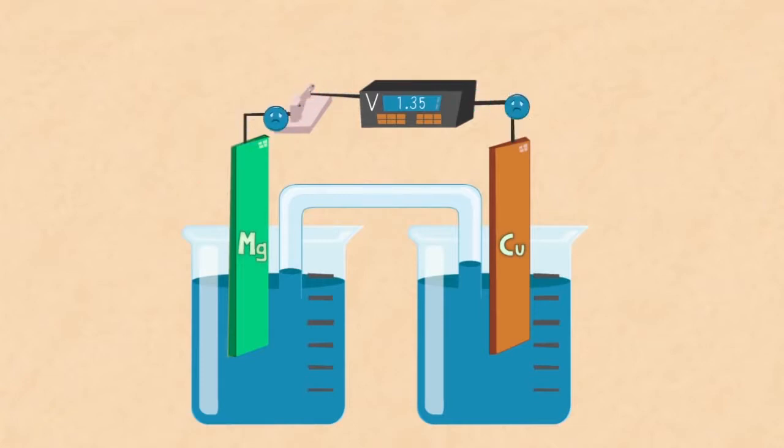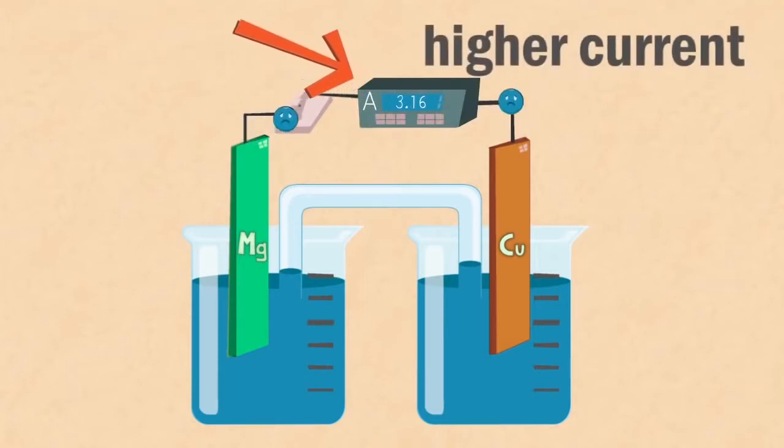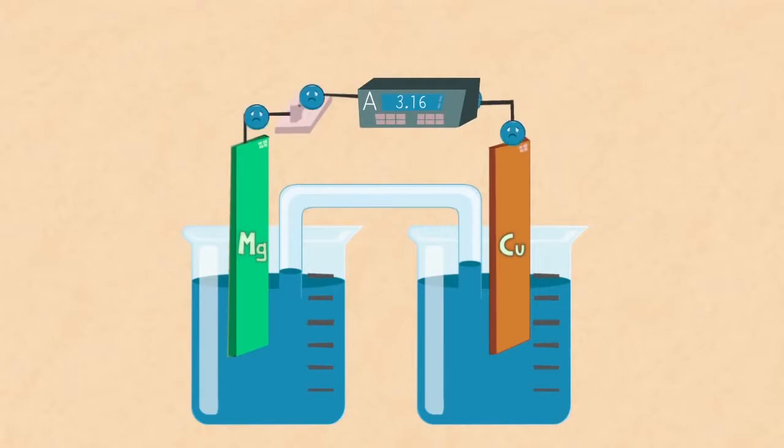Similarly, as a result of a greater force on these electrons, more charges would pass a point in a given second. This means that the current would be higher as well. Did you get it right? In summary, what have we learned?